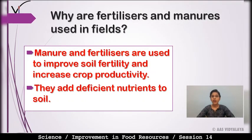Your next question is: Why are fertilizers and manures used in fields? Manures and fertilizers are used to improve soil fertility and increase crop productivity. Inki wajah se soil fertility improve hoti hai aur crop productivity increase hoti hai.